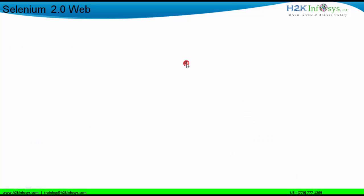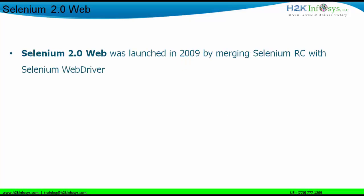Moving forward, we are going to see the Selenium 2.0 web version. Selenium 2.0 was launched in 2009 by merging Selenium RC and the Selenium WebDriver project together. So Selenium 2.0 was a combination of Selenium RC merged with Selenium WebDriver. Apart from WebDriver, it also contained Selenium IDE and Selenium Grid — retaining those from the 1.0 version. The only difference was that Selenium WebDriver replaced Selenium RC.